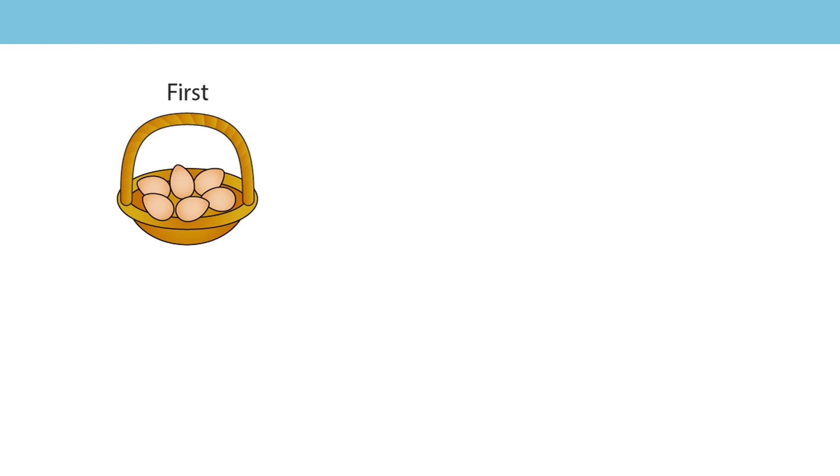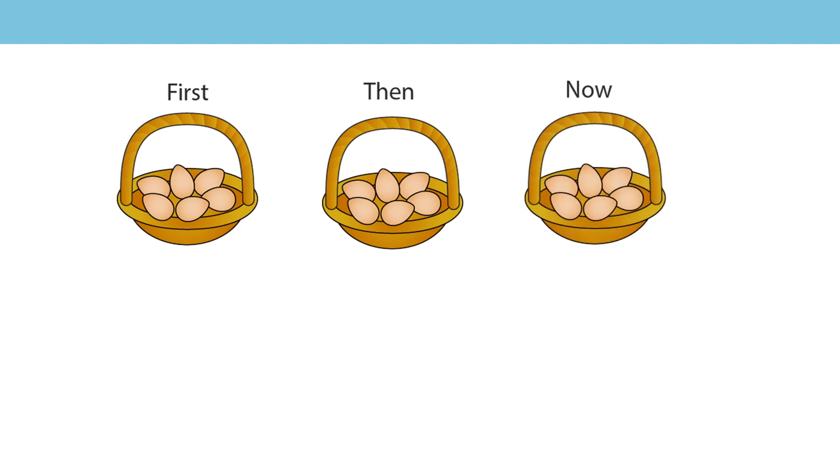In this example, I've got 6 eggs in my basket. I decide I'm going to share some out with my friends. But none of my friends need any eggs, so I end up giving 0 away. That means that I still have 6 eggs in my basket.